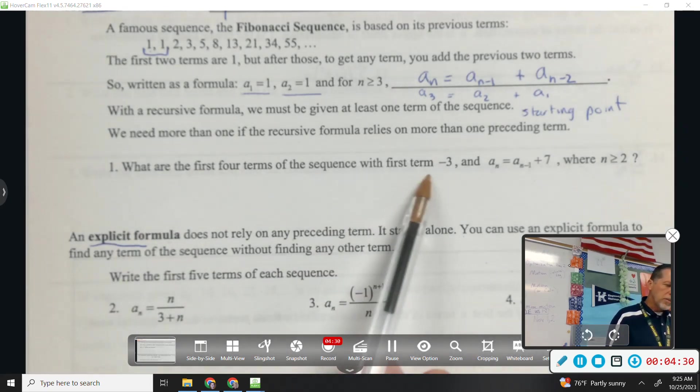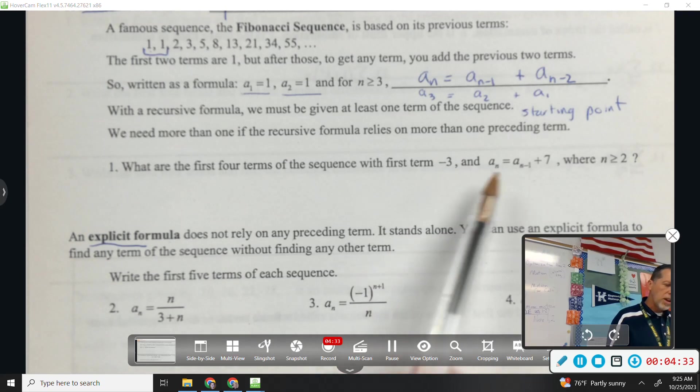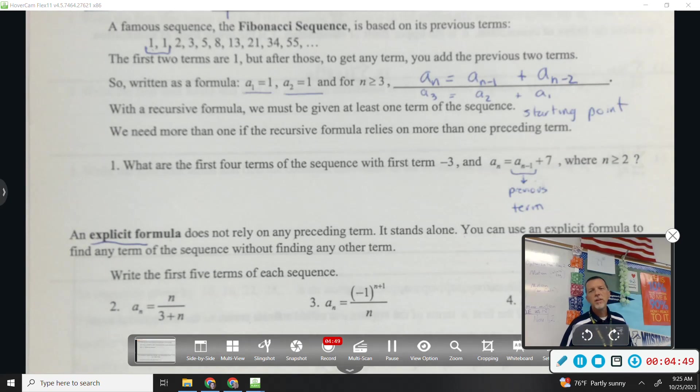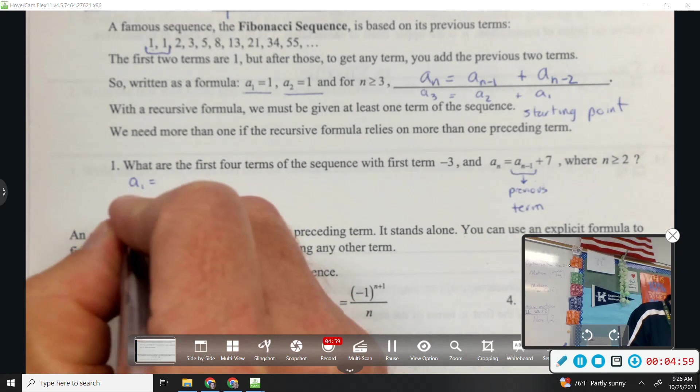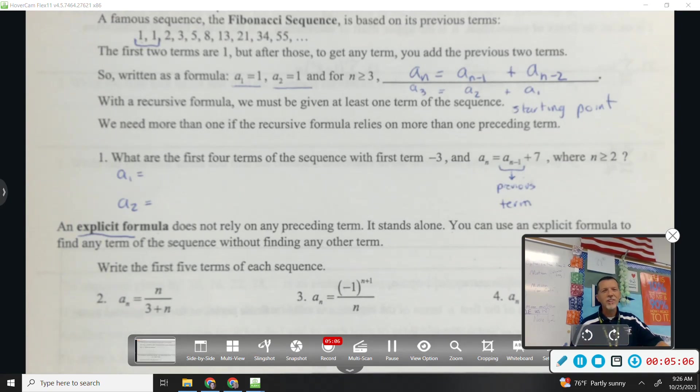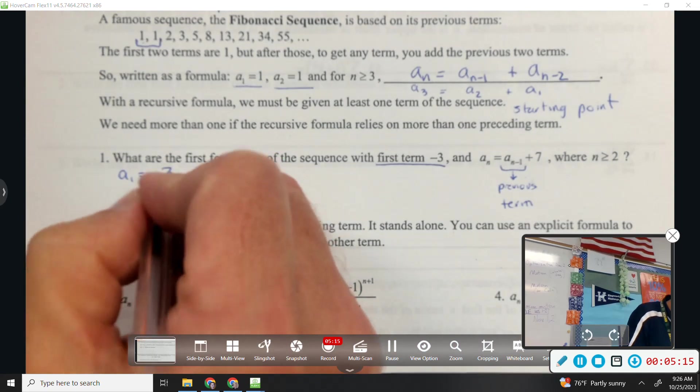Number one, what are the first four terms of the sequence with the first term negative 3 and then a sub n equals a sub n minus 1 plus 7? I like to see a sub n minus 1 just know that that means the previous term. So don't get hung up on plugging in a sub 3, which means a sub 2, just the previous term plus 7. So the first four terms. What's the first term? Some people get thrown off here. Negative 3. Some people are eager to say, ah, negative 3 plus 7, that's 4. Well, it is, but the first term is still negative 3.